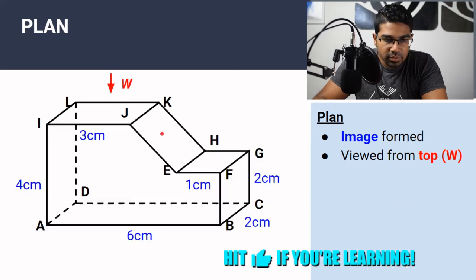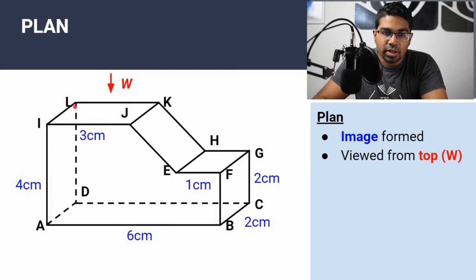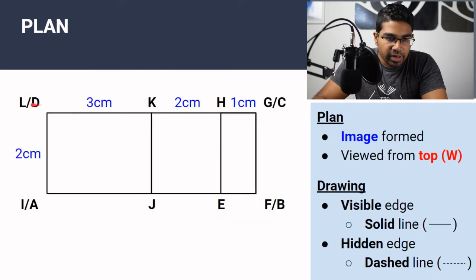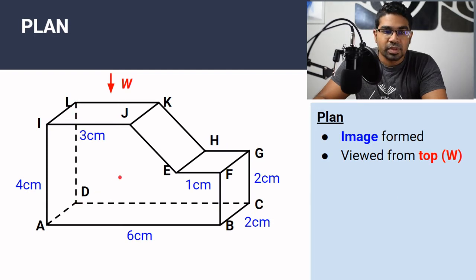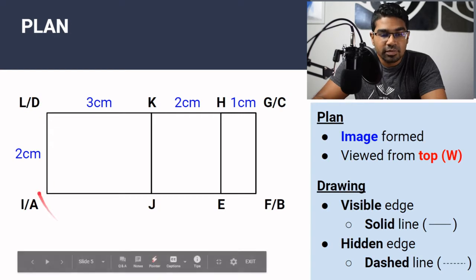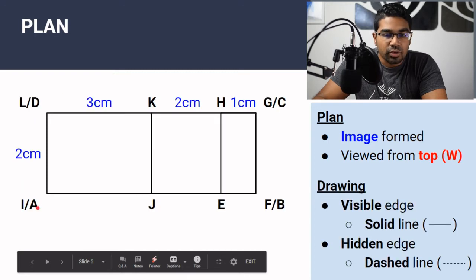Let's look back at our drawing here. When we look from the top, we see L at the corner, and then we write L here. Stroke D means D is a vertex directly behind L. That is why we write L stroke D. Same for this — here is I, and behind I is A, so we write I stroke A.